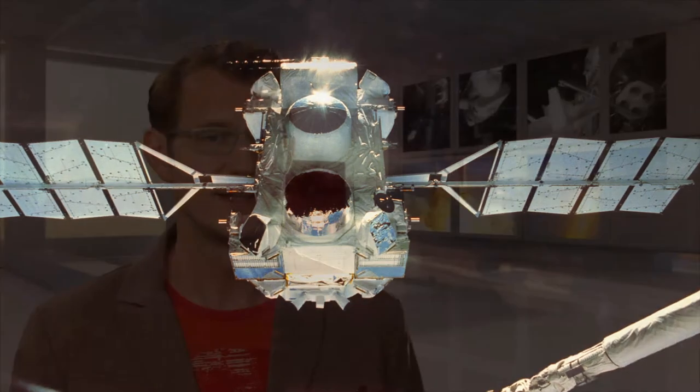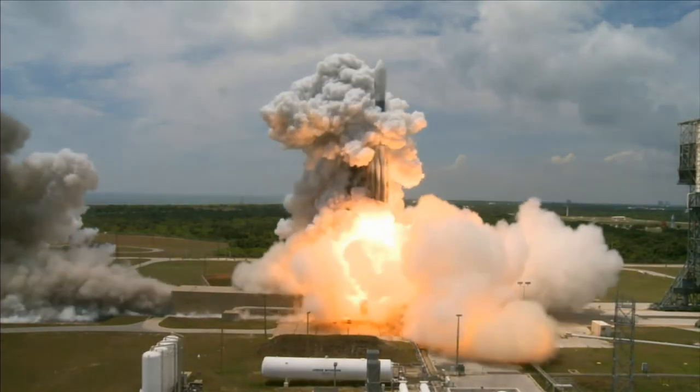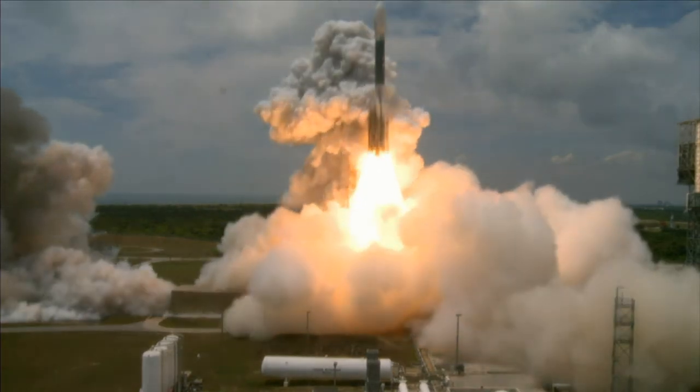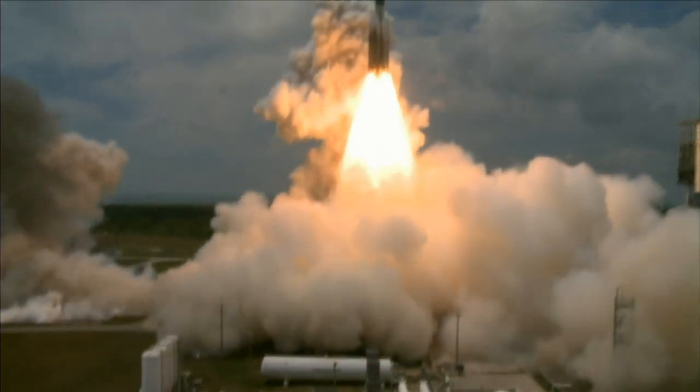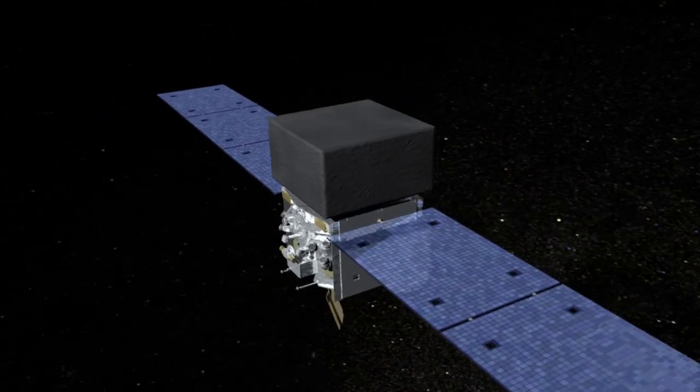In the 1990s, NASA operated the Compton Gamma Ray Observatory. At the time, it was the largest and most massive scientific satellite ever launched, a fully-fledged physics lab in space. In 2008, Compton was succeeded by GLAST, the Gamma Ray Large Area Space Telescope. It will study everything in the high-energy universe from dark matter to pulsars.